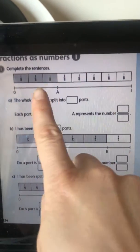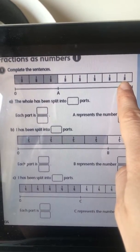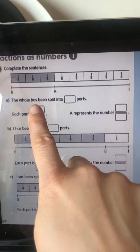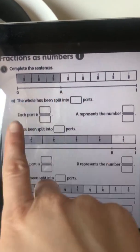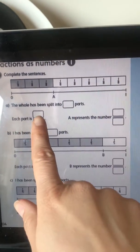So what have we split it into on the top one? I'm hoping you can see that. How many, so it says, the whole has been put into how many equal parts? Okay, and you're going to put that there. So each part is worth what? And you're going to put the fraction in there.